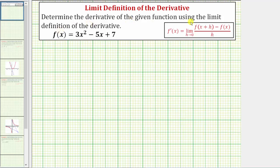We're asked to determine the derivative of the given function using the limit definition of the derivative. The limit definition of the derivative is given here, where f prime of x, or the derivative of f of x, equals the limit as h approaches zero of this quotient, and this quotient is called the difference quotient.